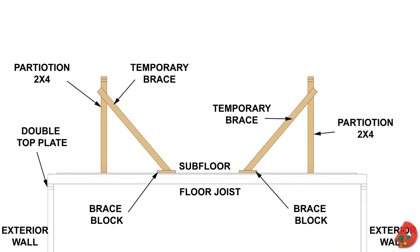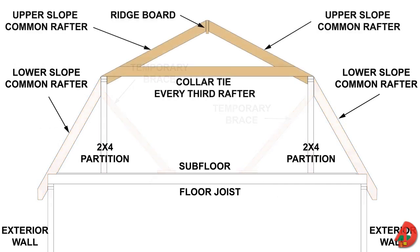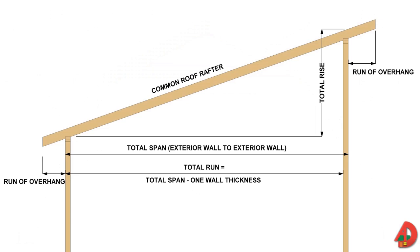A recommended procedure to install a gambrel roof is: install and temporarily brace partitions; install lower slope common rafters; install ridge board and upper slope common rafters; fasten collar tie to every third set of rafters. A shed roof has only one slope. Common rafters of a shed roof are marked at each end for seat cuts where they will rest on two opposite walls of the building. The rafters are also marked for overhang cuts on each end, and the length is based on the unit rise and total run.